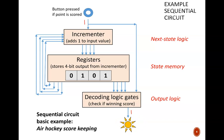This example only shows one person's score. This is a simple example, but it contains all the features of a typical sequential circuit. At the heart is a register circuit, which holds the state memory.